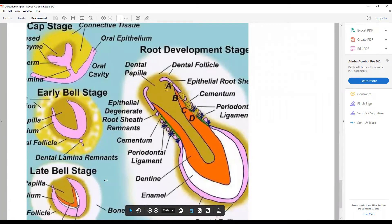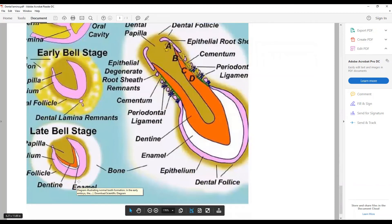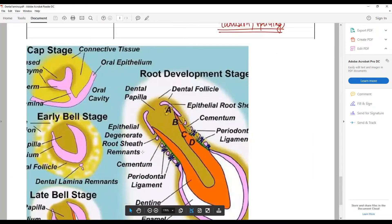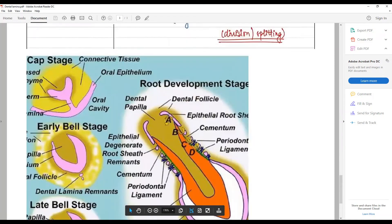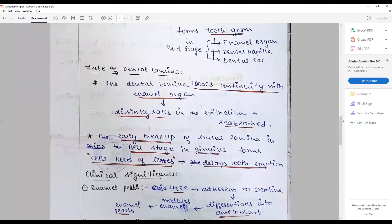It is completely gone by the late bell stage. This is very important and that is where the dental lamina fate is very important. The dental lamina in the advanced or early to advanced bell state loses its continuity with the enamel organ.